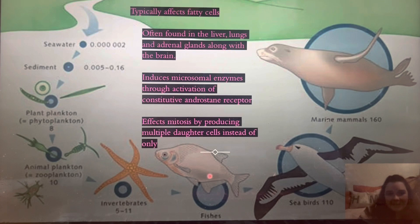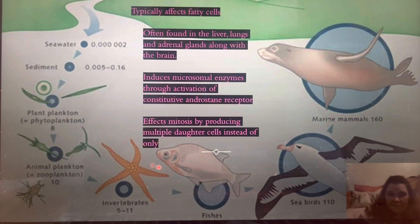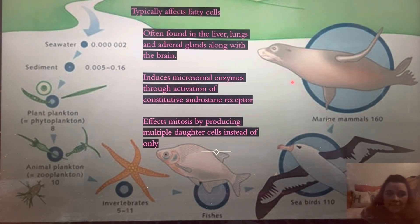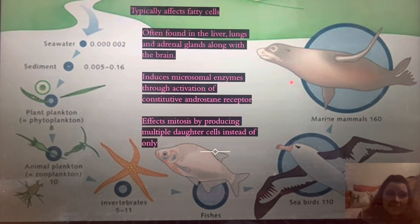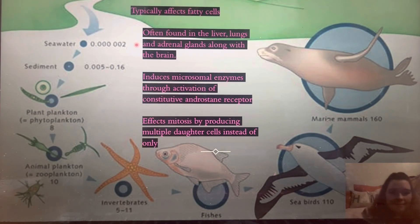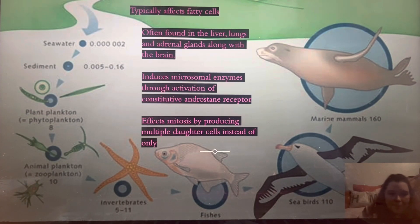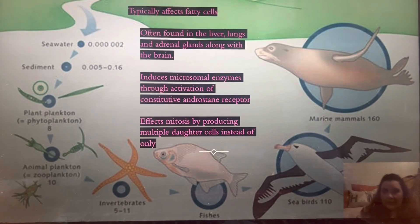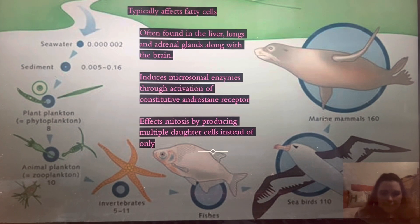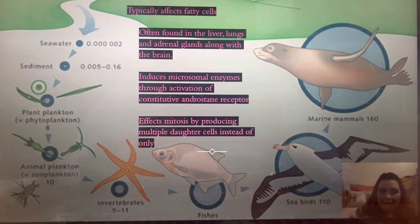This diagram shows how DDT goes from being runoff to sediment and then all the way up to affecting marine mammals. It typically affects fatty cells, and it's one of those things that replicates itself — which is what causes the cancer to happen.